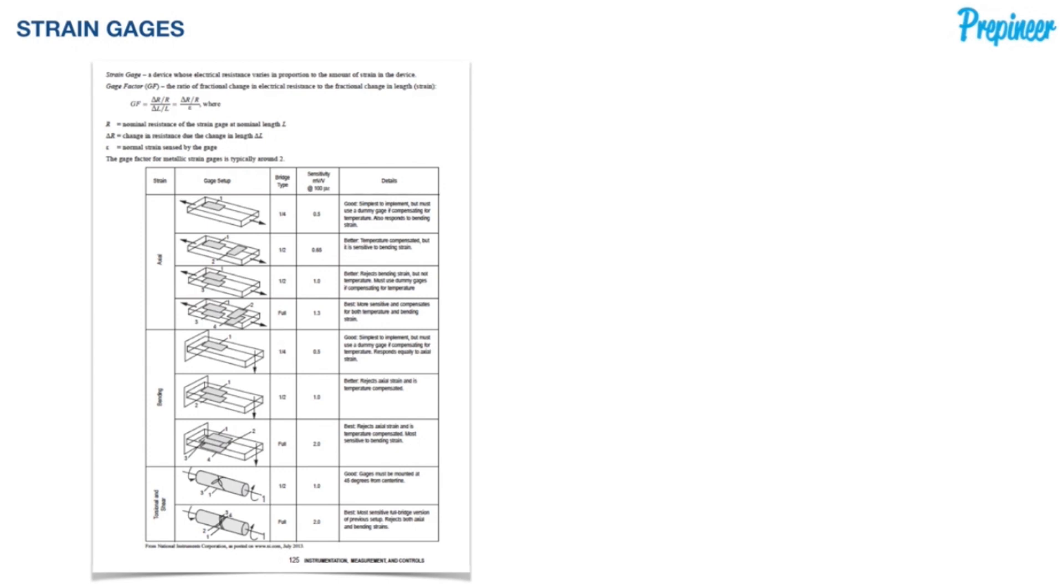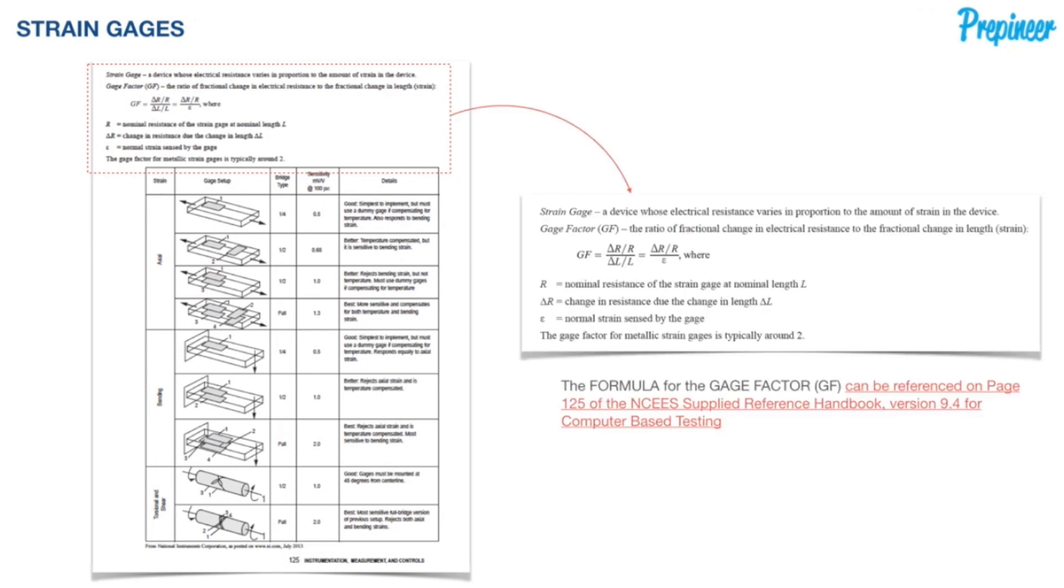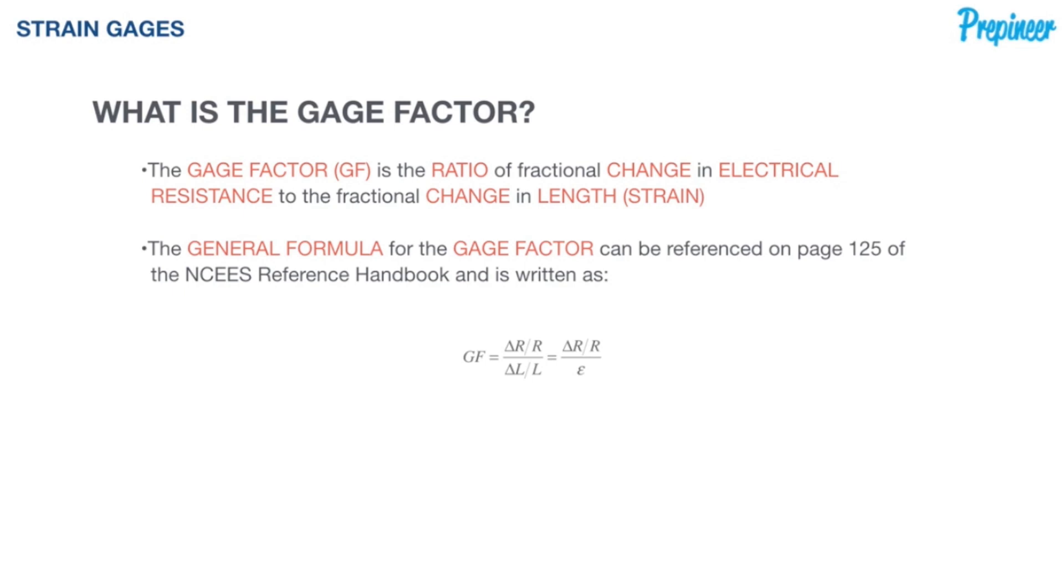If we hop back to page 125 of our NCES reference handbook, we can hone in on this section in the upper portion of the page. It'll give us a nice short definition of gauge factor if we hit some type of conceptual problem on the exam. But it also gives us that formula. GF is equal to delta R over R divided by delta L over L, which the change in length divided by the length is the strain. So there's our general formula.